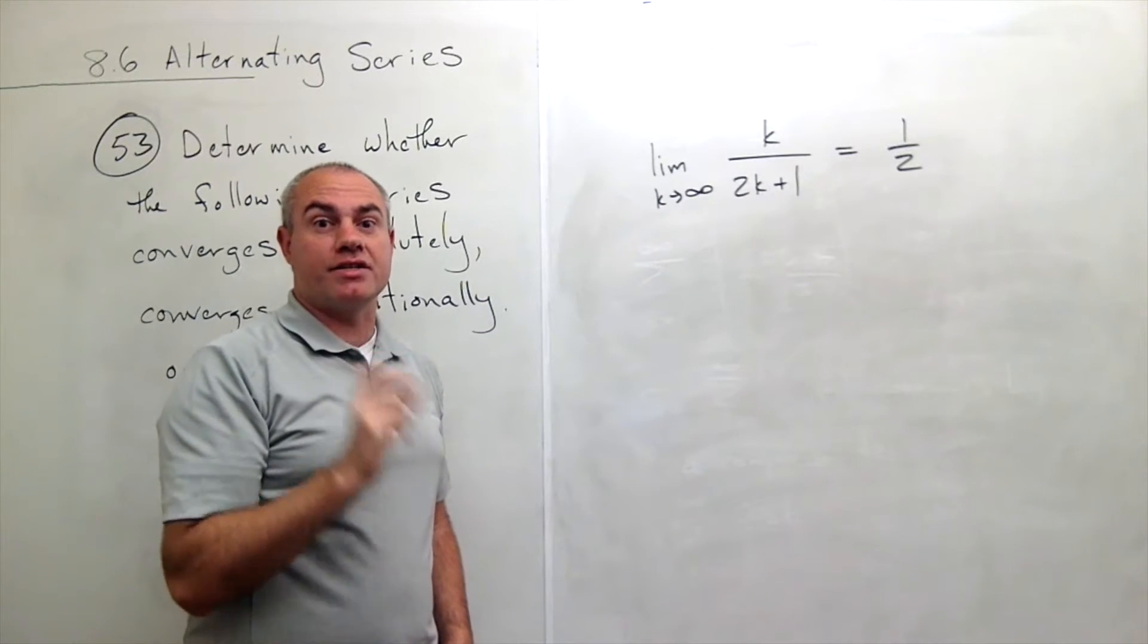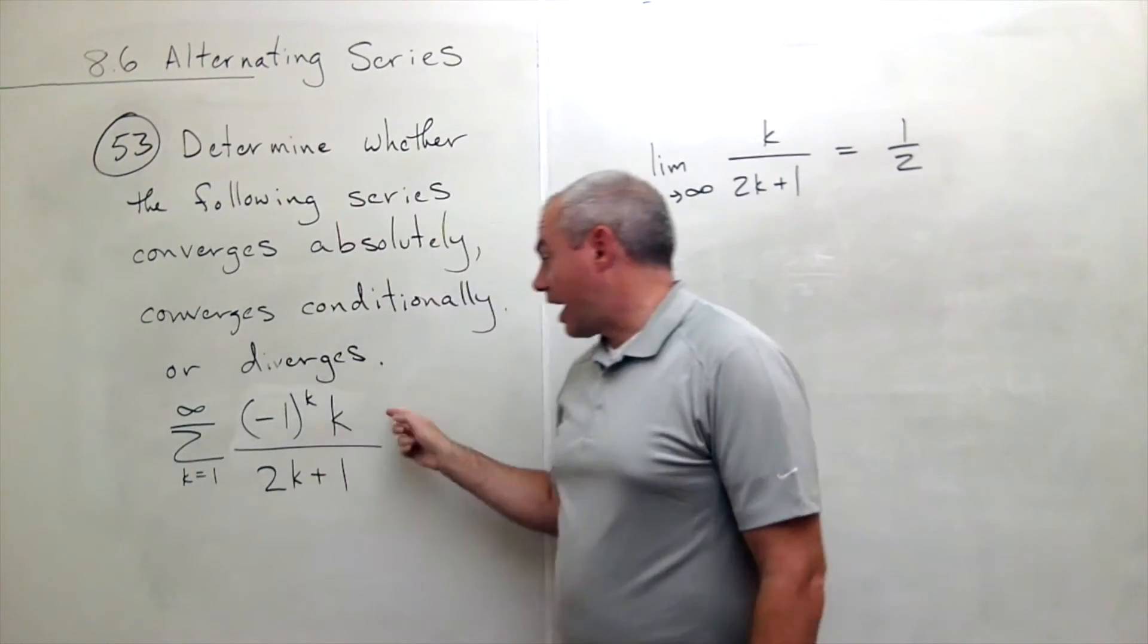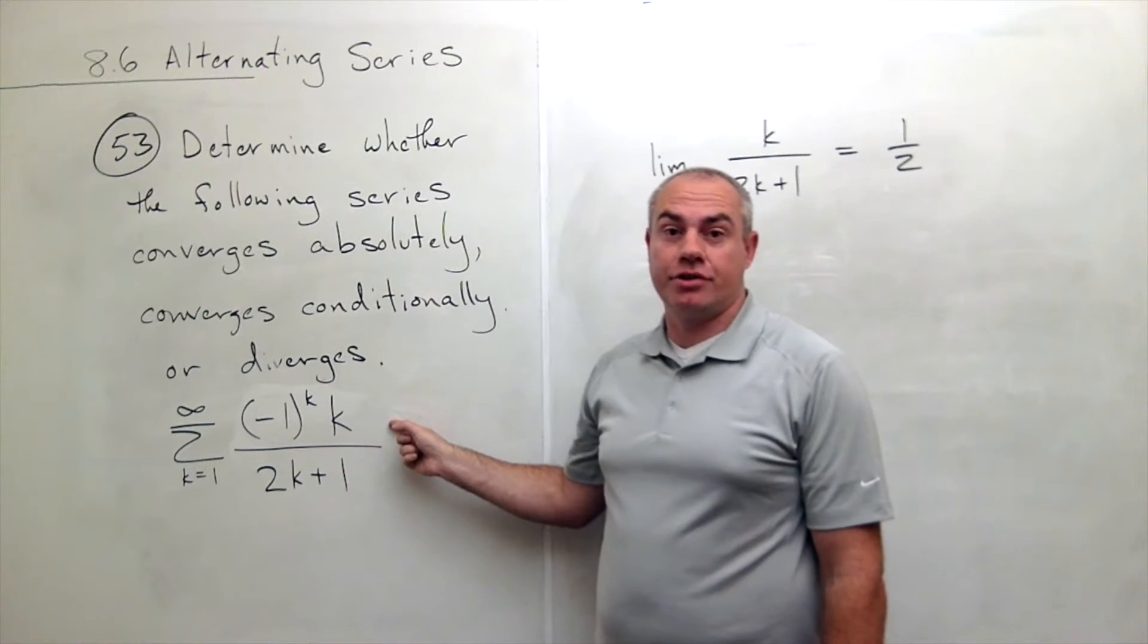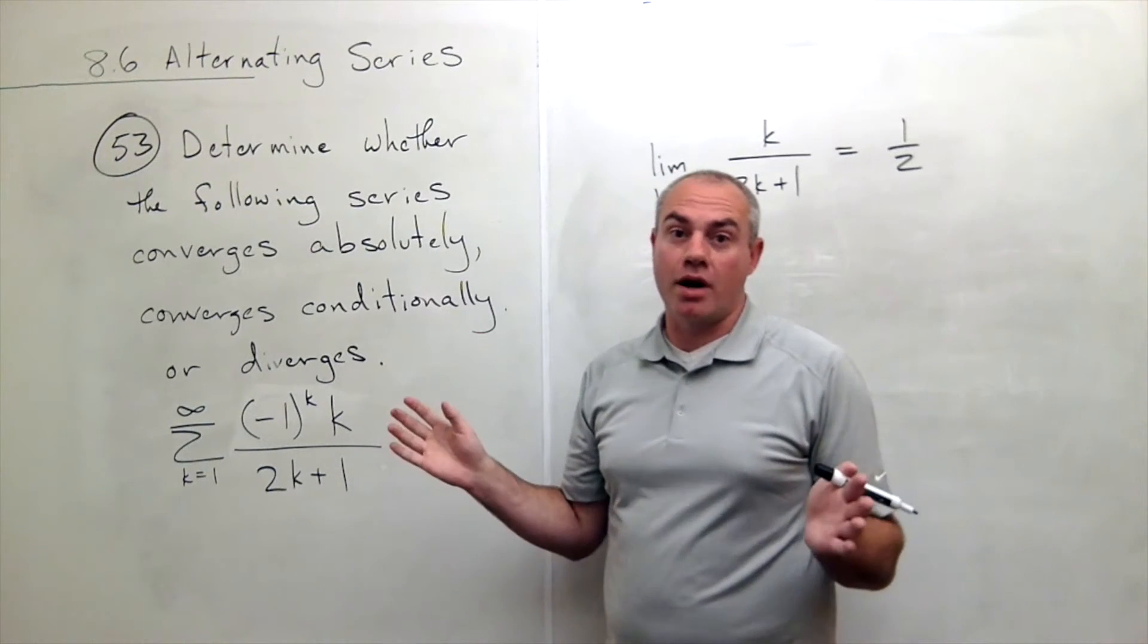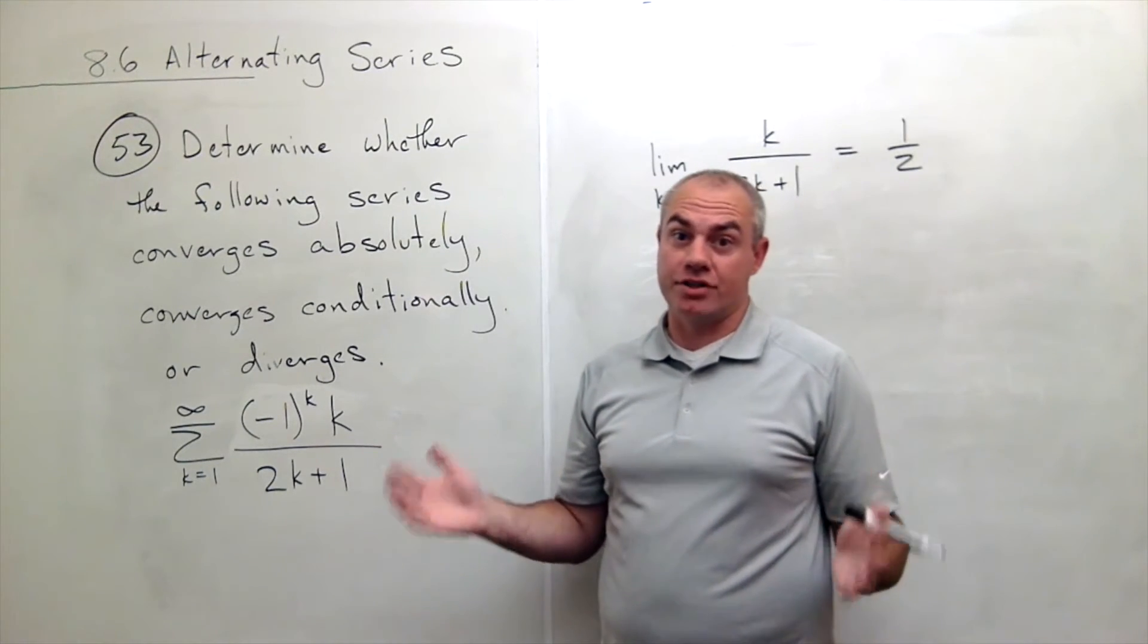This is actually going to one half. So by the alternating series test, this guy must diverge. So I don't really need to worry about does it converge absolutely. It doesn't even converge conditionally.